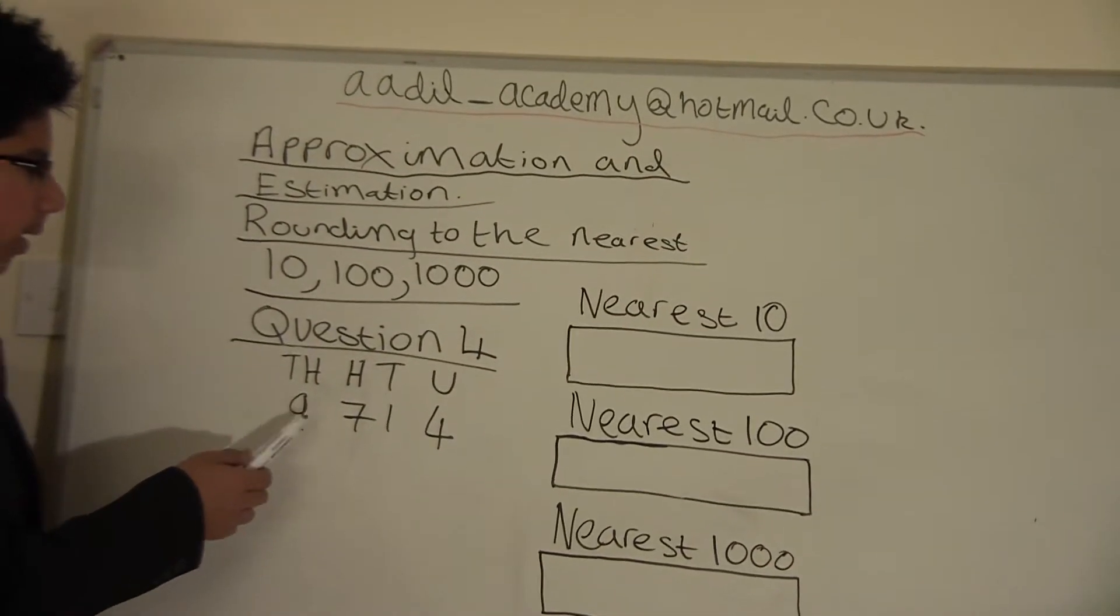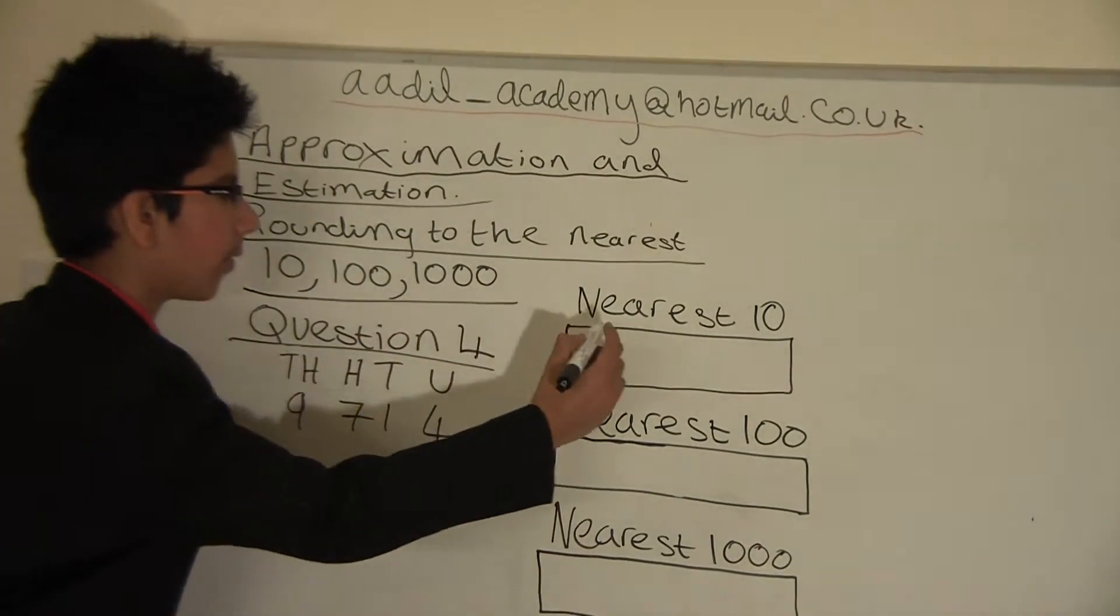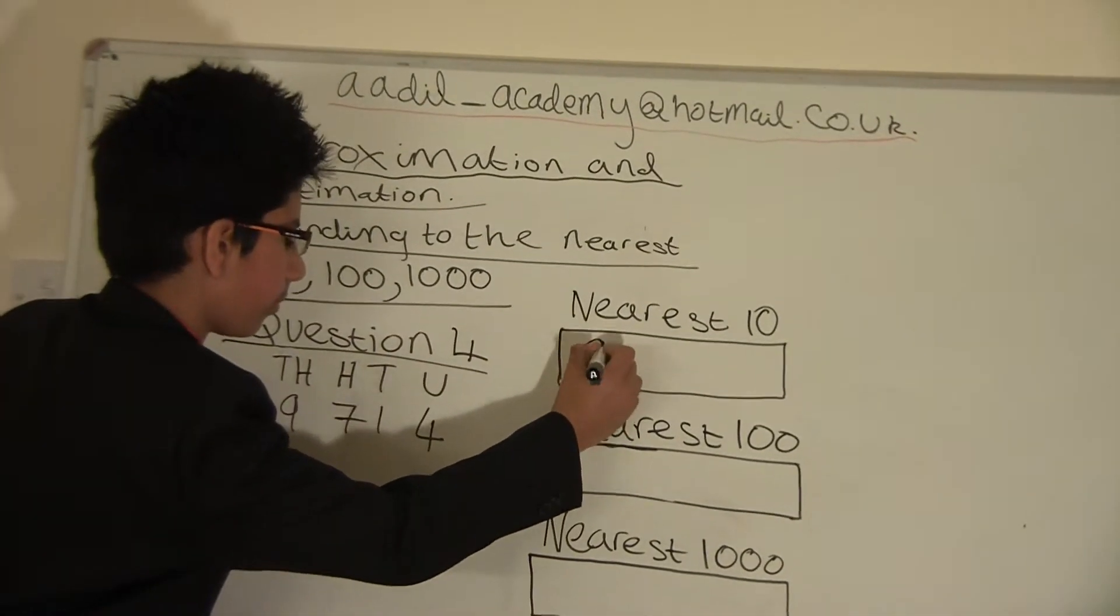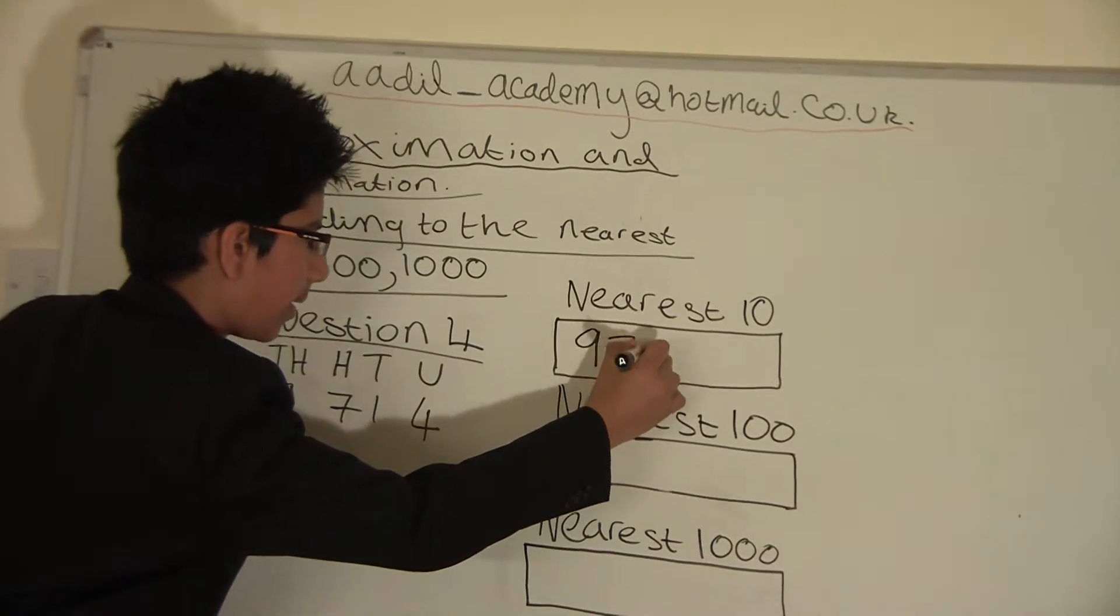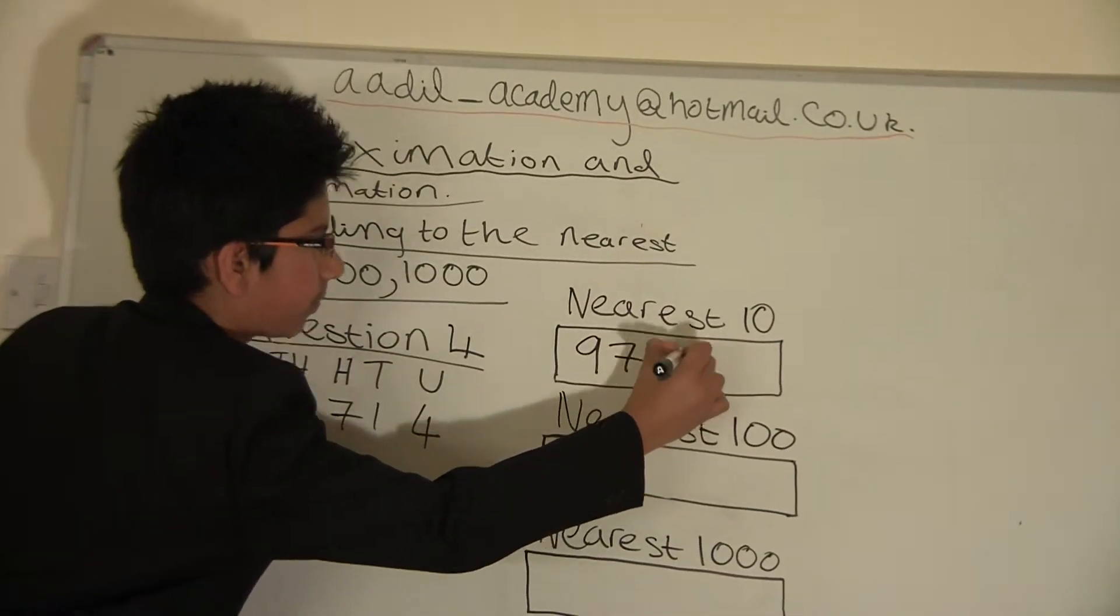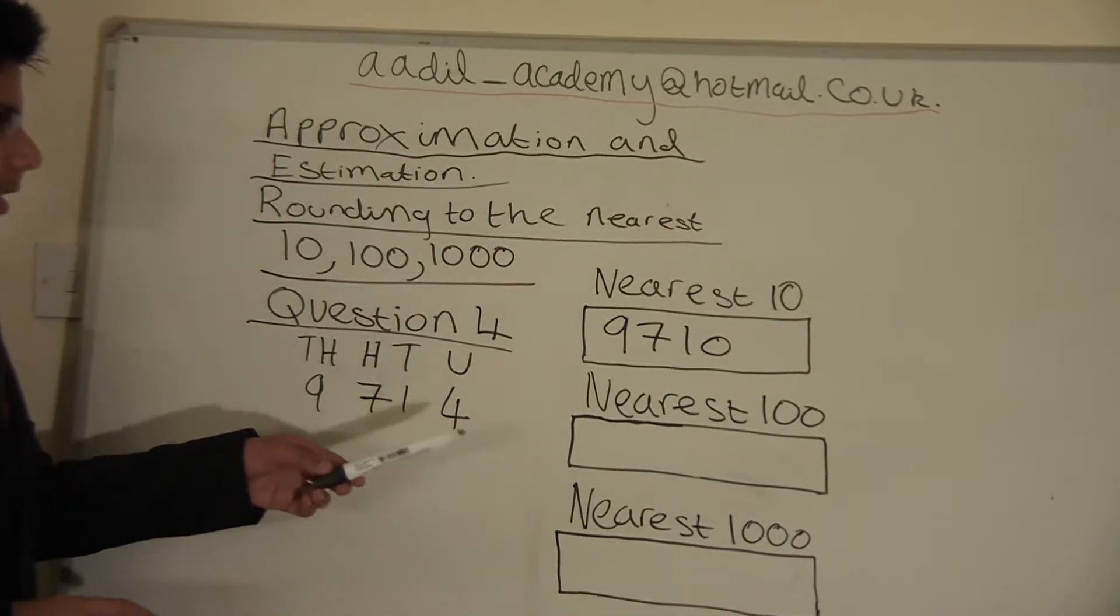Our answer is 9710 for the nearest 10 because we have rounded down. To find the nearest 100, we will look at the tens column.